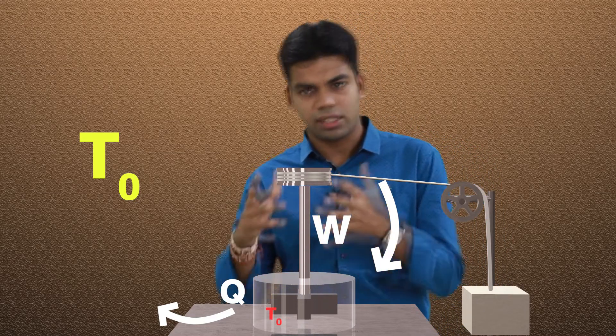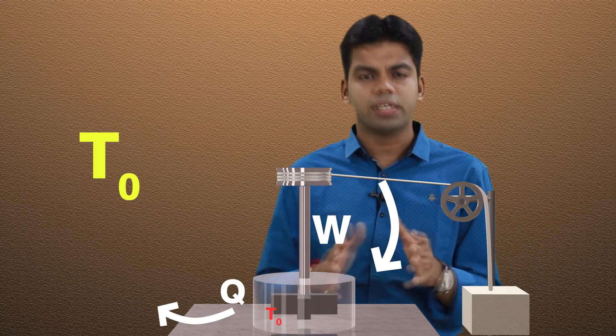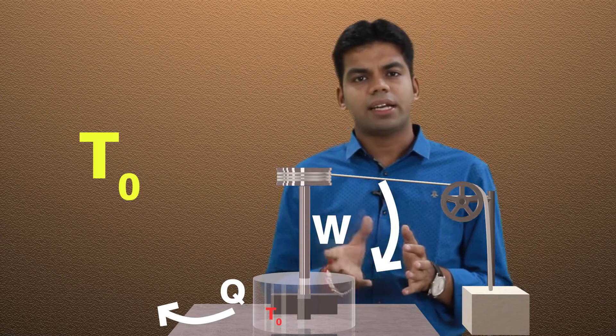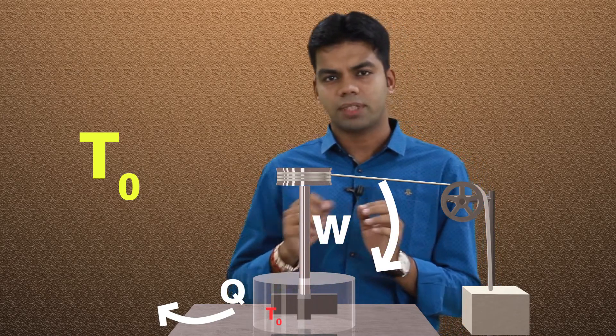That means this is the whole cycle. Initially the temperature was T0. After doing certain work on it, the temperature becomes T1. And after that, again when we expose this to the atmosphere, temperature again becomes T0. This becomes the whole cycle.